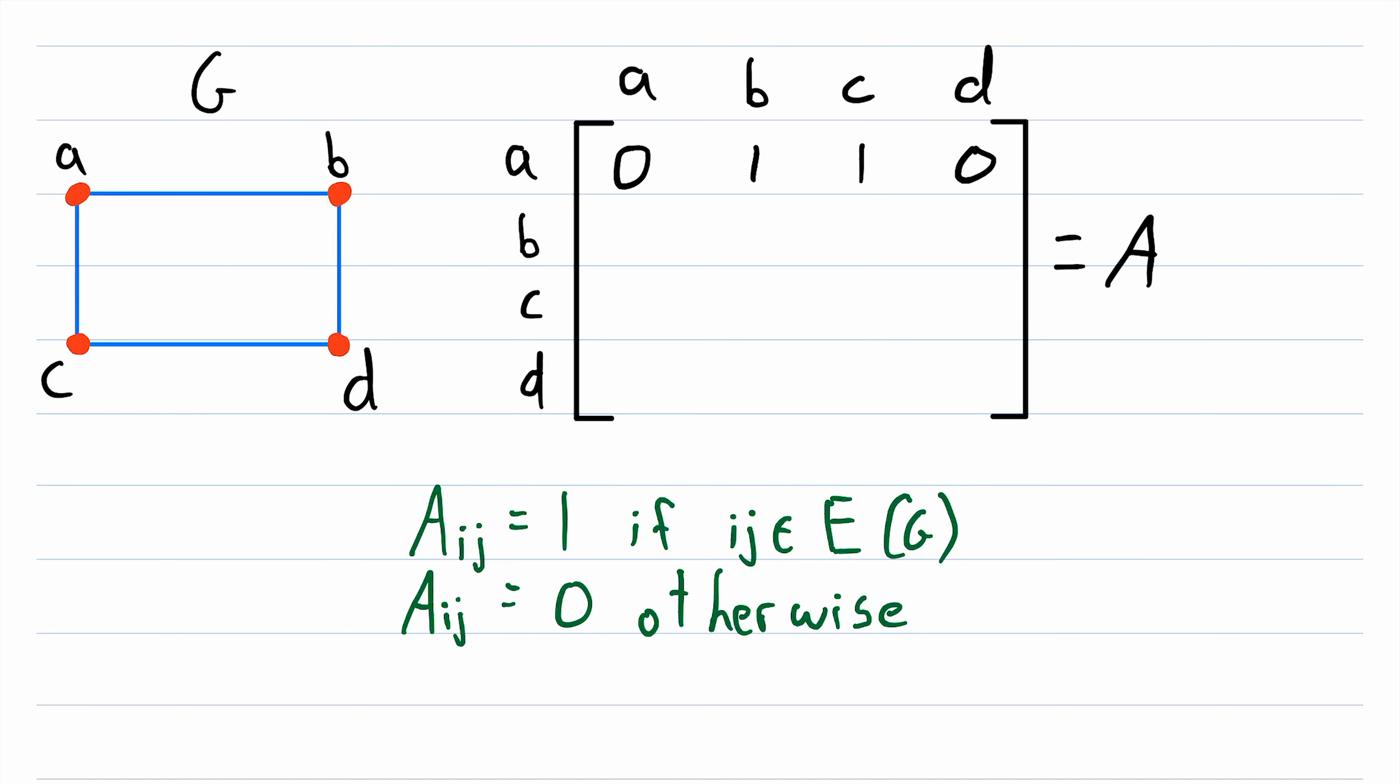Now we'll fill in the rest a little quicker. B is adjacent to A, so this is 1. B is not adjacent to itself, this is 0. B is not adjacent to C, this is 0. B is adjacent to D, so this is 1. C is adjacent to A, so this is 1. C is not adjacent to B, so this is 0. C is not adjacent to itself, so this is 0. C is adjacent to D, so this is 1. D is not adjacent to A, so this is 0. D is adjacent to B, so this is 1. D is adjacent to C, so this is 1. And D is not adjacent to itself, so this is 0.